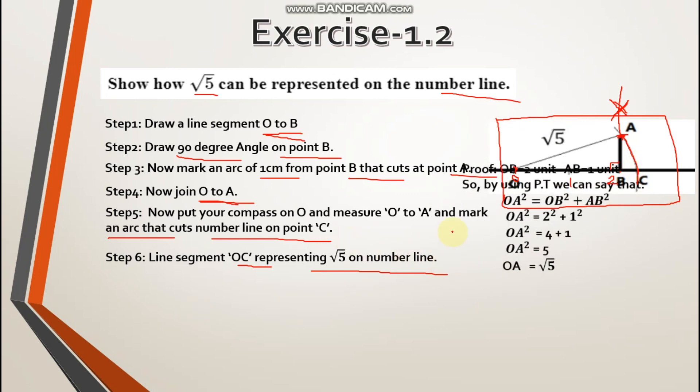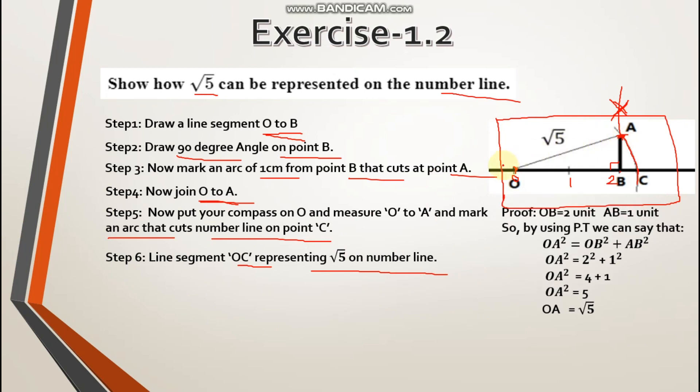Let's see how we prove it. Which was your triangle? Right angle triangle. What do we use in right angle triangle? Pythagoras theorem. In Pythagoras theorem, by using Pythagoras theorem, we can say that hypotenuse square is equal to base square plus perpendicular square.